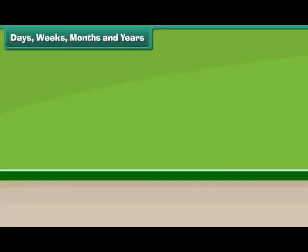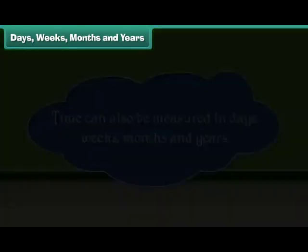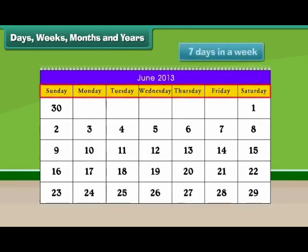Days, weeks, months and years. Time can also be measured in days, weeks, months and years. There are 7 days in a week.